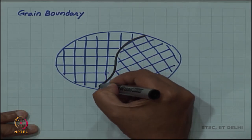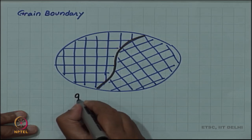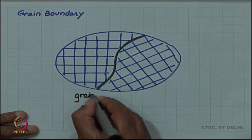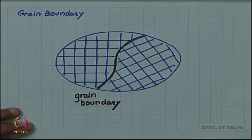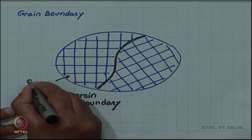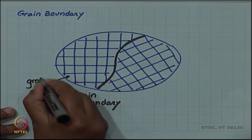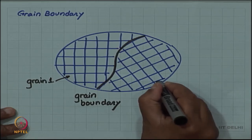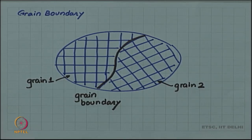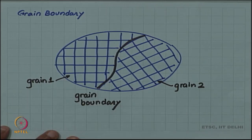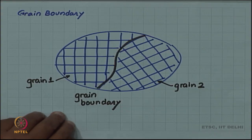This boundary will be called a grain boundary. We will call one region grain 1, and the other region grain 2, and this will be a boundary between grain 1 and grain 2. In fact, there are only two crystals here — two grains — so it will really be called a bicrystal.